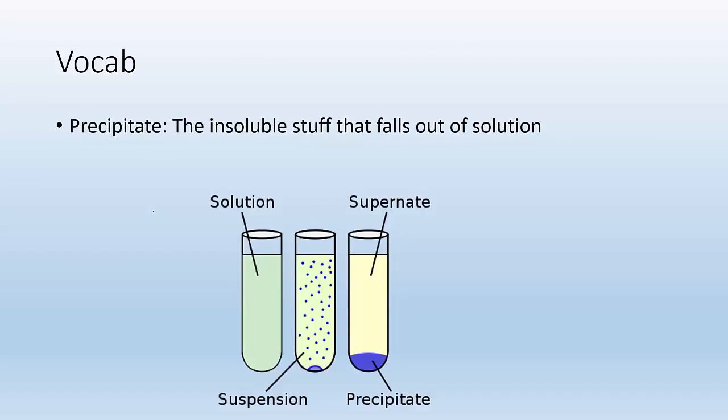Vocabulary. The precipitate is the insoluble stuff that is going to fall to the bottom of the solution. So the precipitate is the stuff on the bottom, the solution is the stuff with the solute and the solvent mixed together. Precipitate, it's the solid stuff at the bottom.